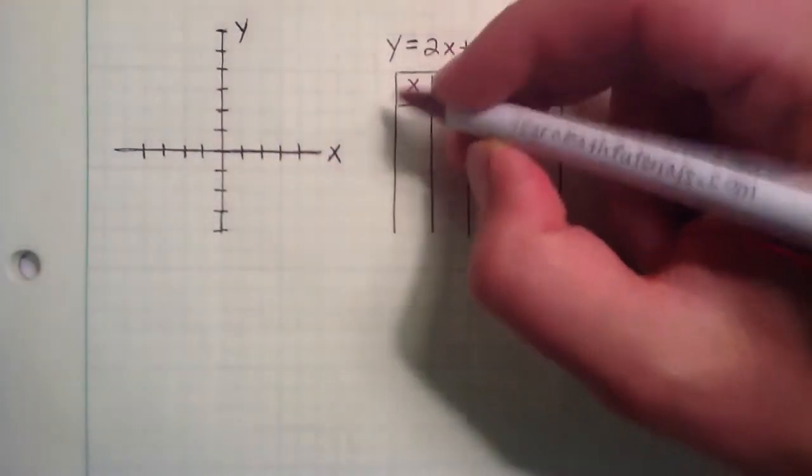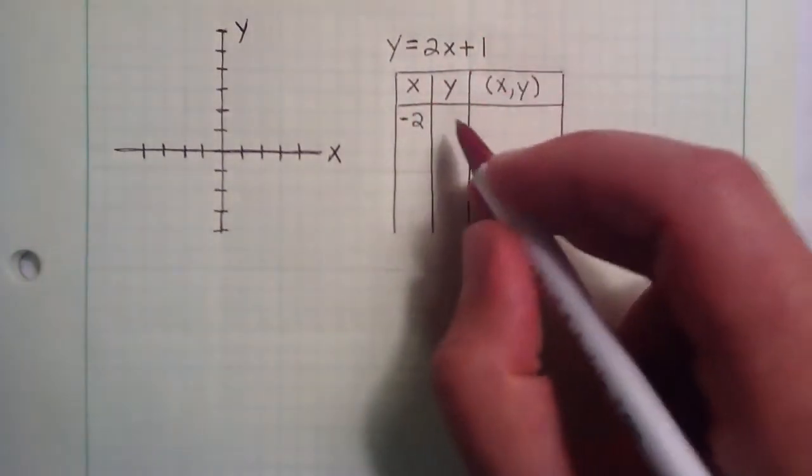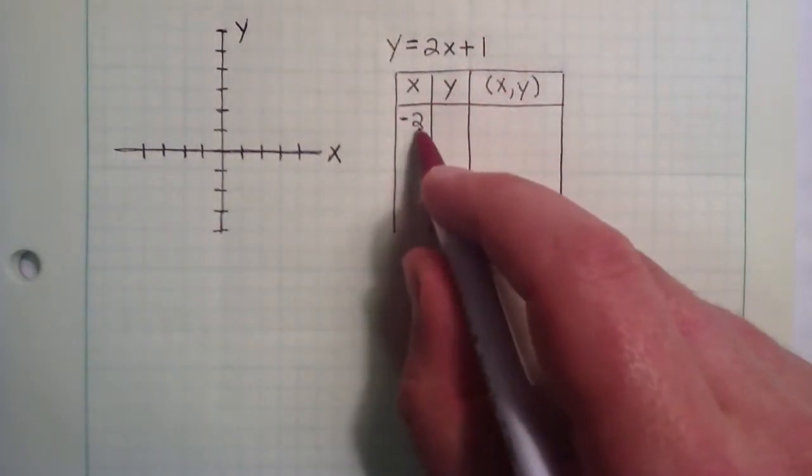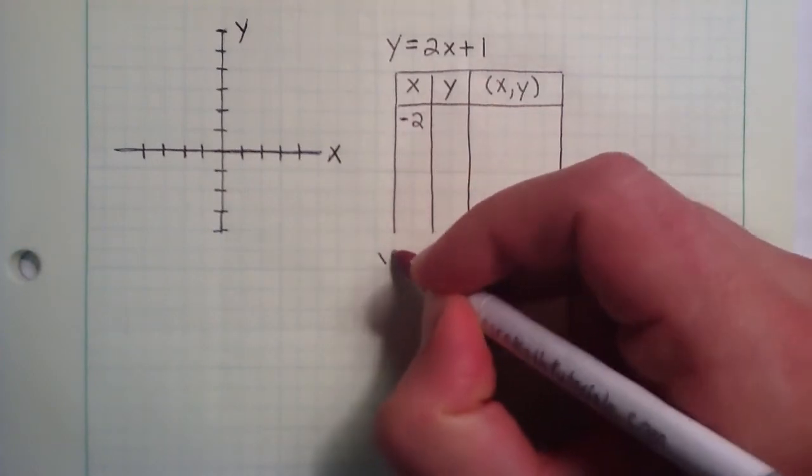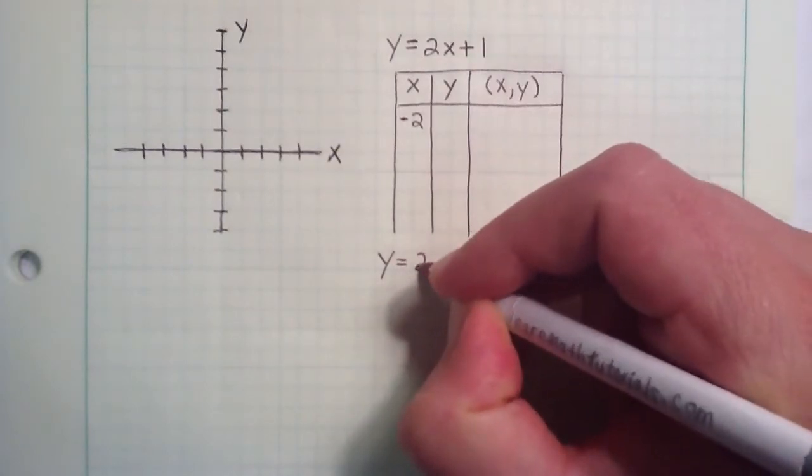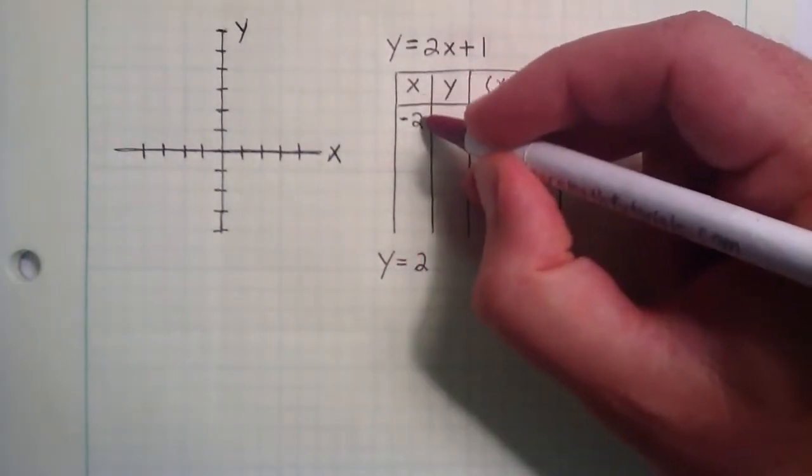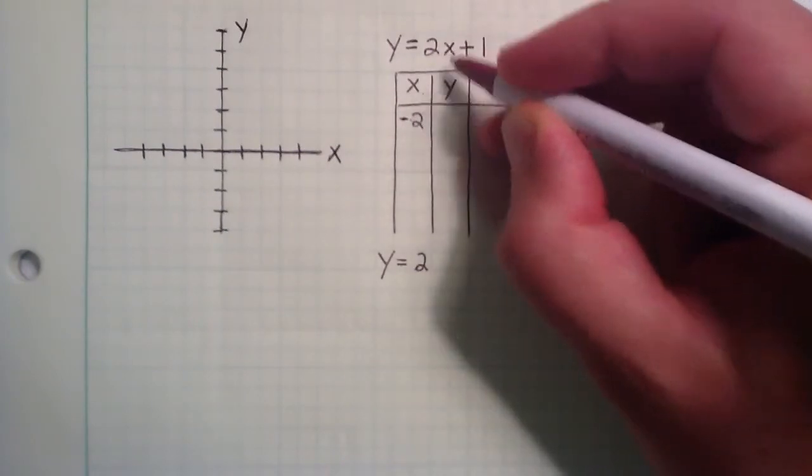So let's start with the x component, negative 2. We want to find the corresponding y component to the x component. So the way we do that is we rewrite this equation up here, y equals 2x plus 1. But this time we specify that our x component was a negative 2, so we write negative 2 in the place of x.